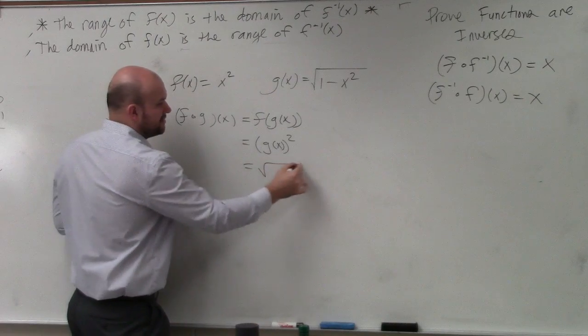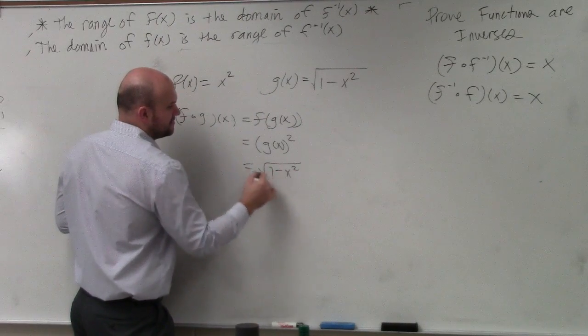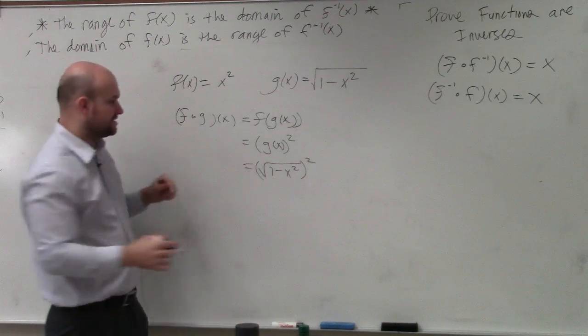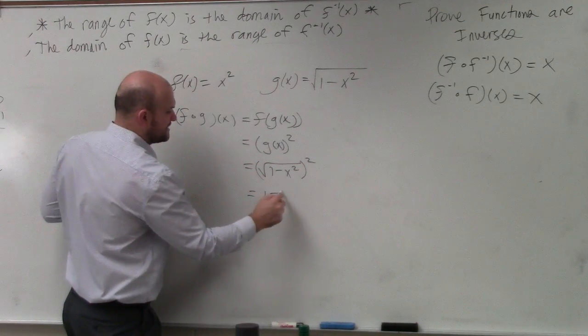Well, g of x is the square root of 1 minus x squared squared. Square root of something squared just leaves us with 1 minus x squared.